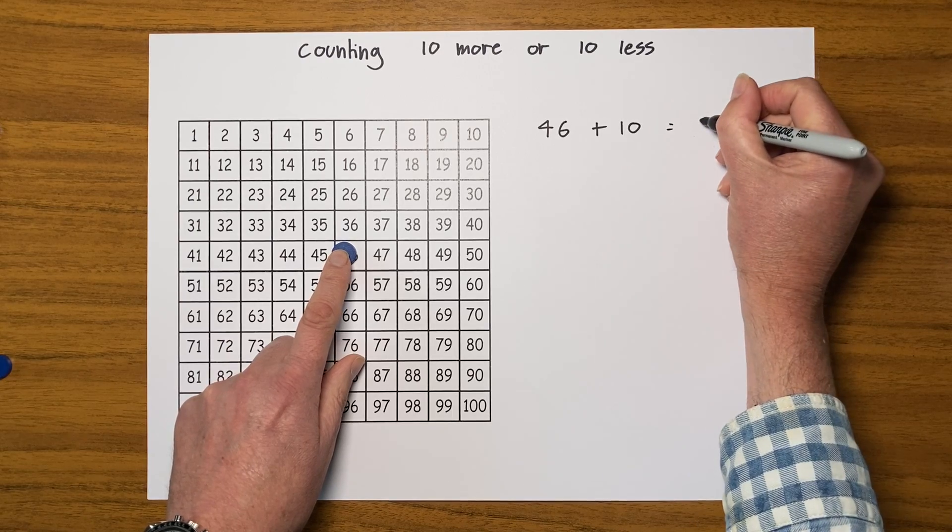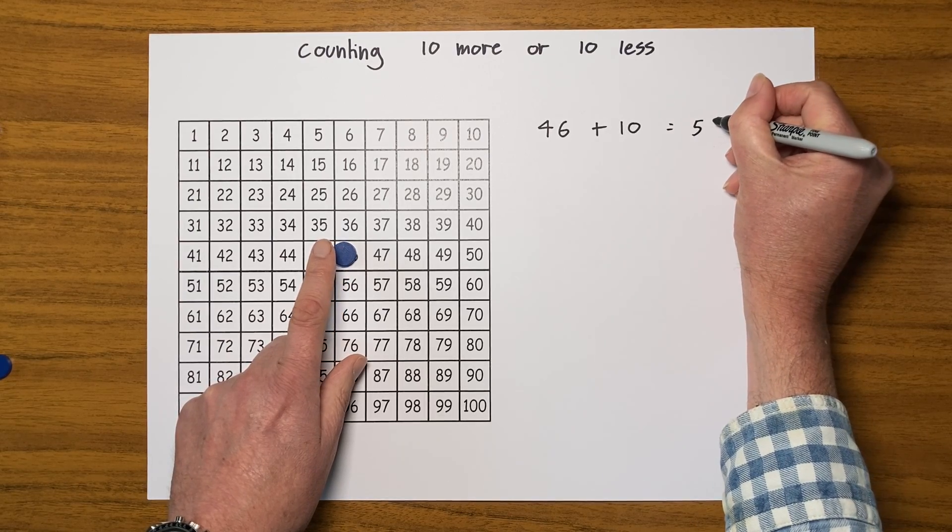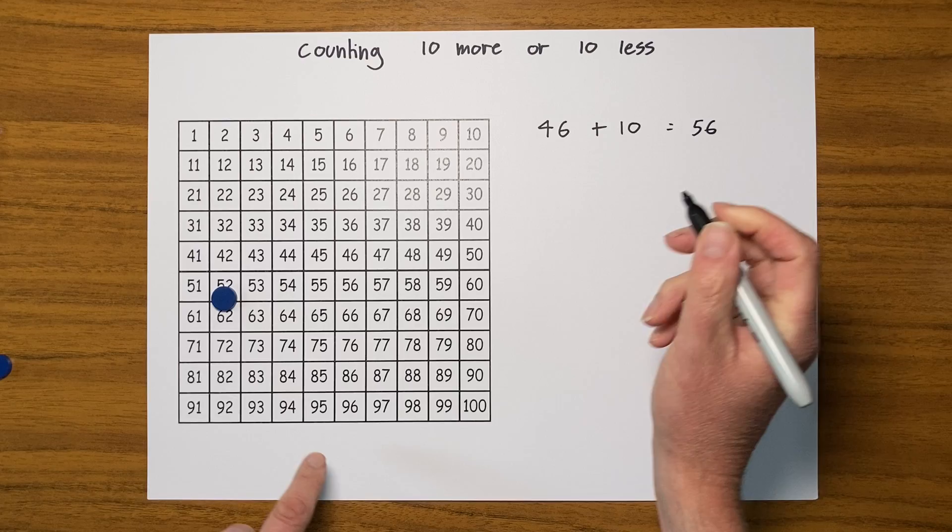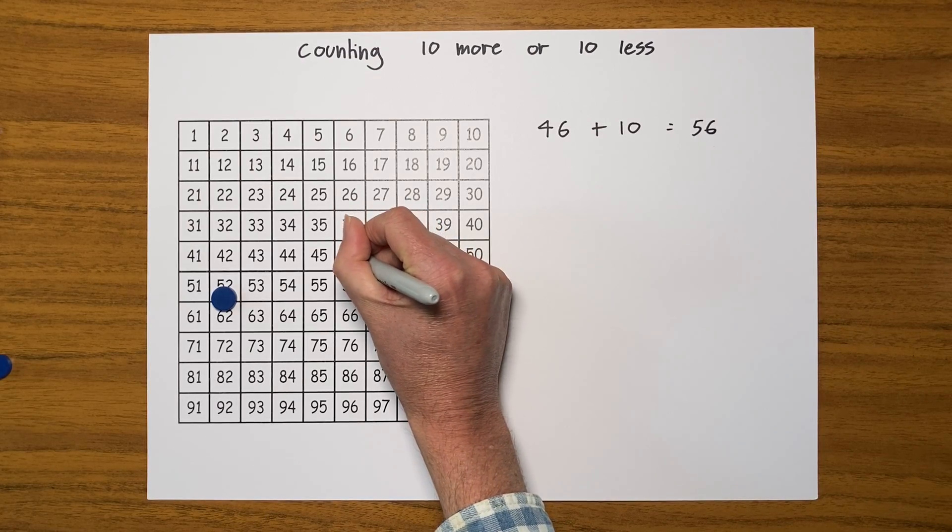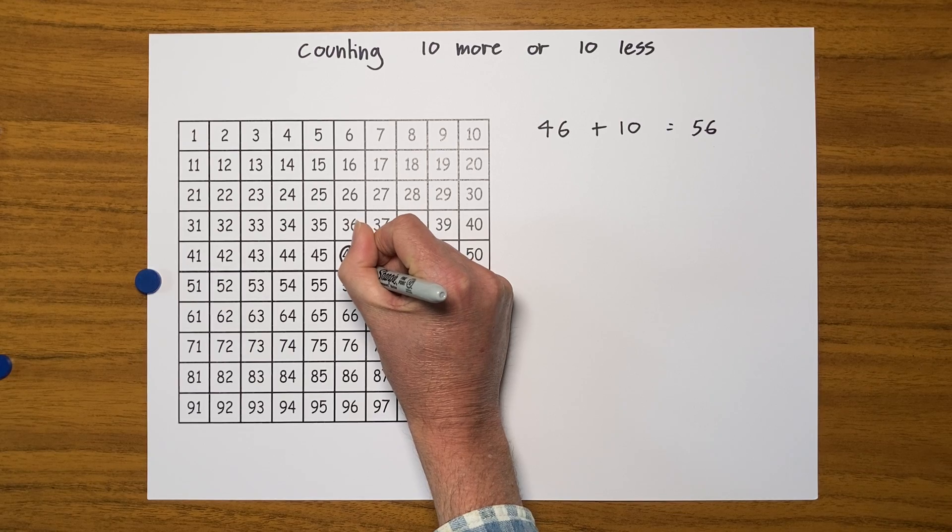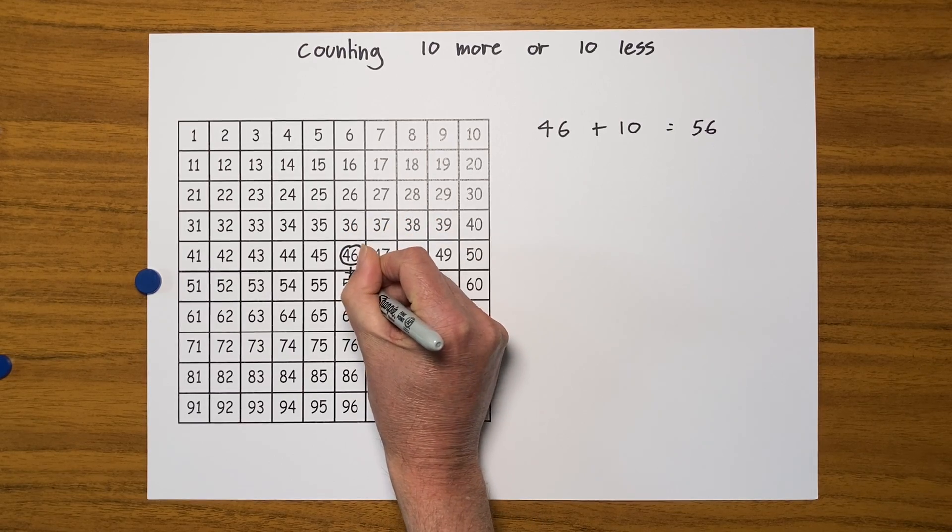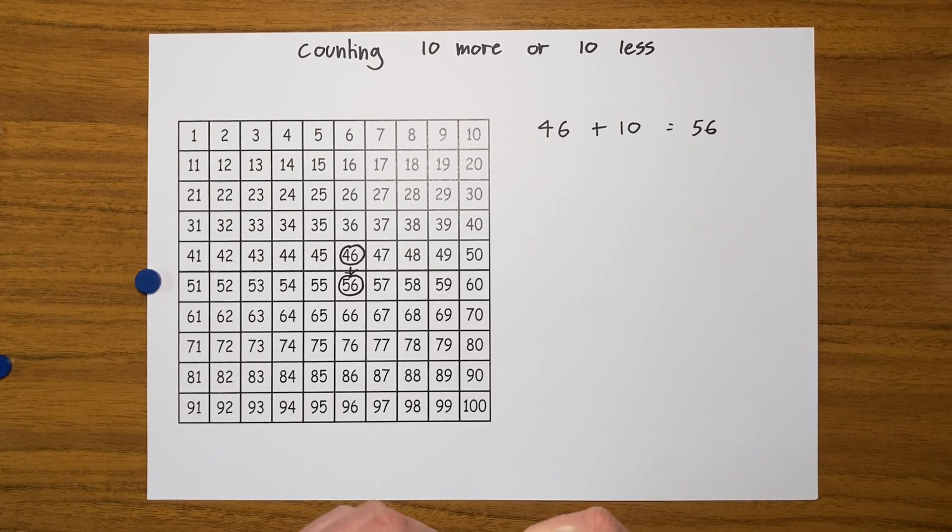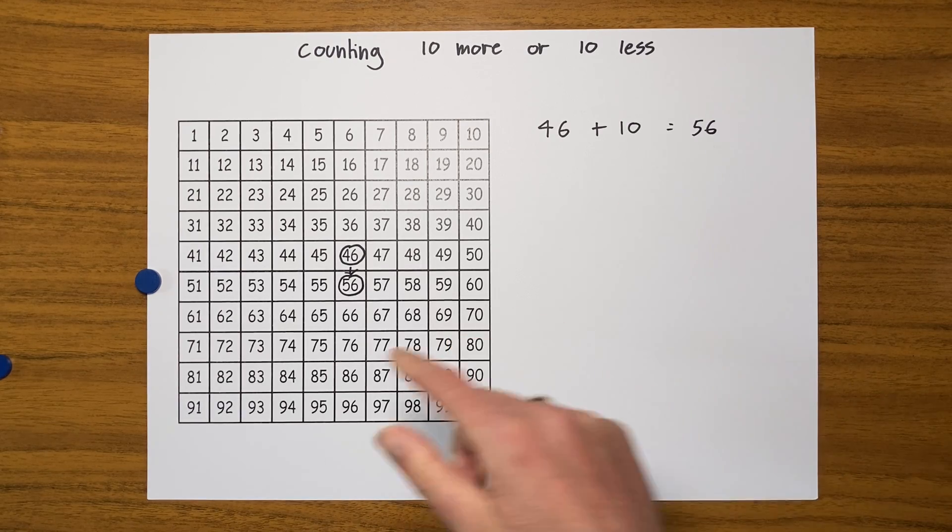So I had 46, I added 10 to give me 56, and I'm going to put a ring around that there. Look, that was where I started - 46 - and I counted on 10 but I went to 56, because to make 10 more on the 100 square all I need to do is move my counter down 1.